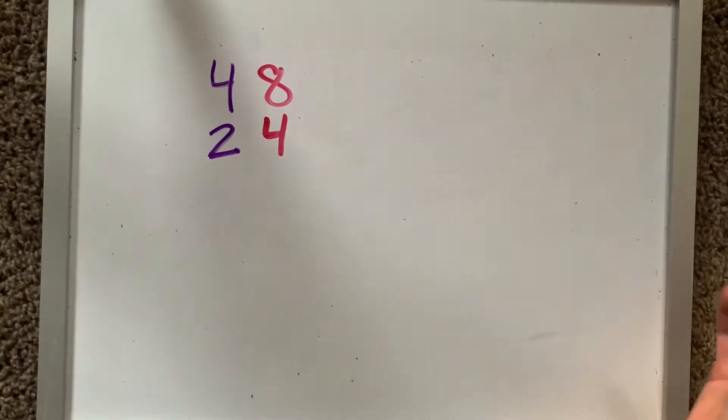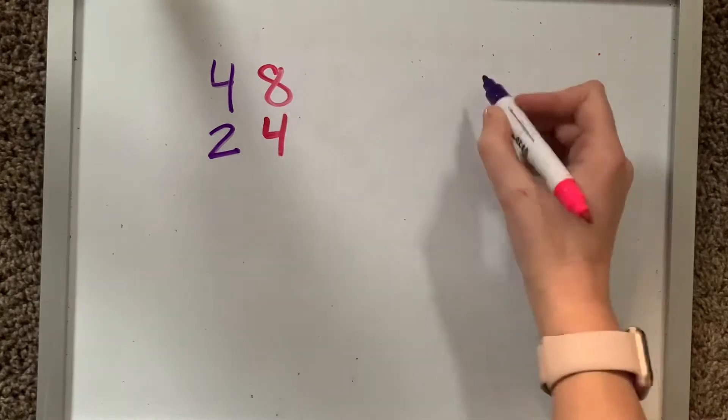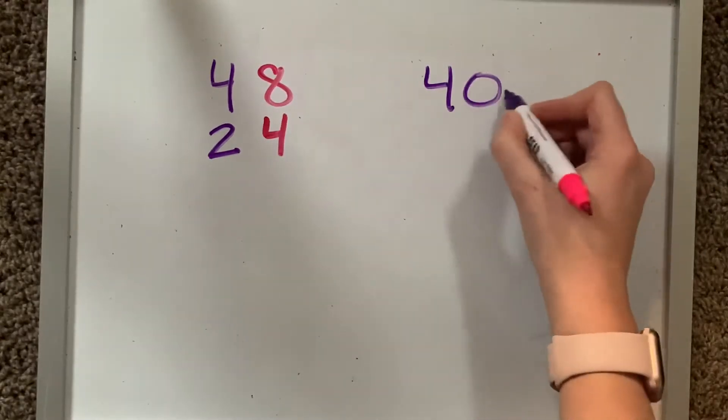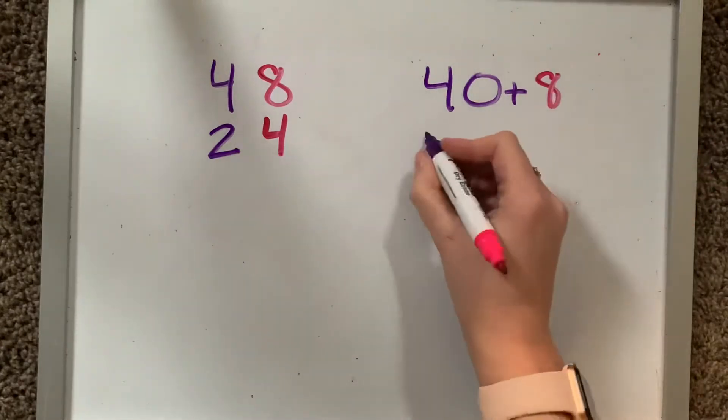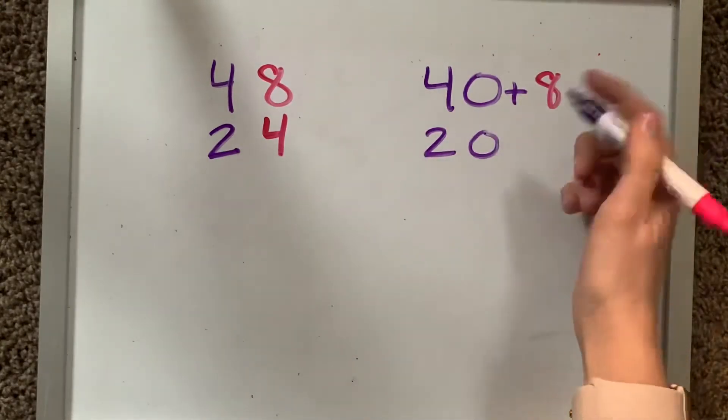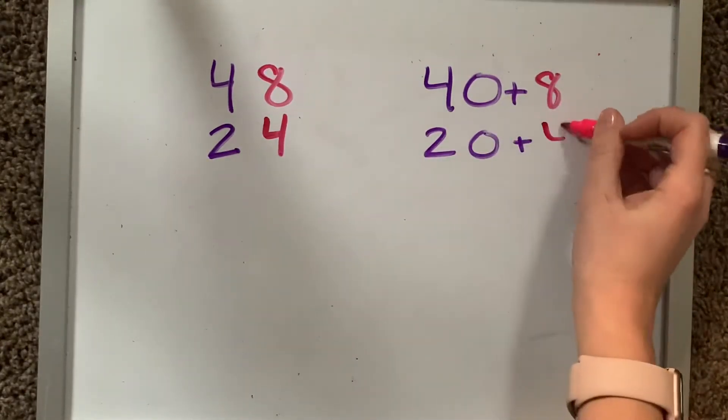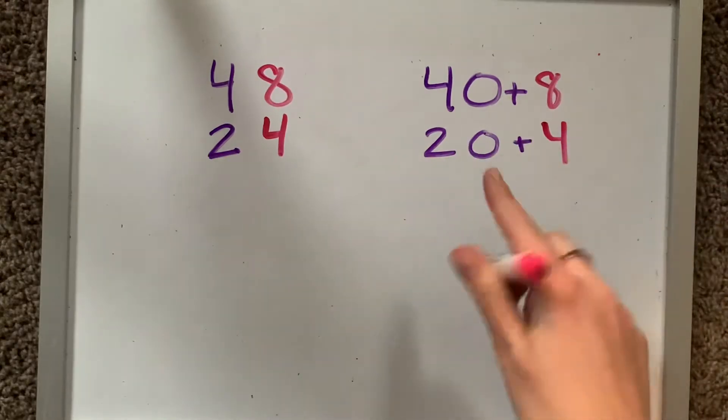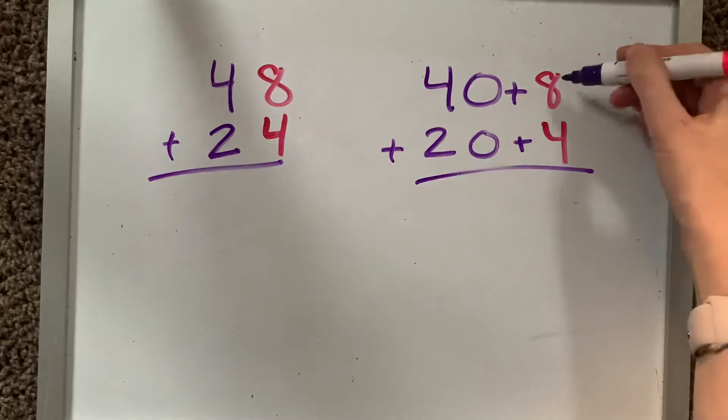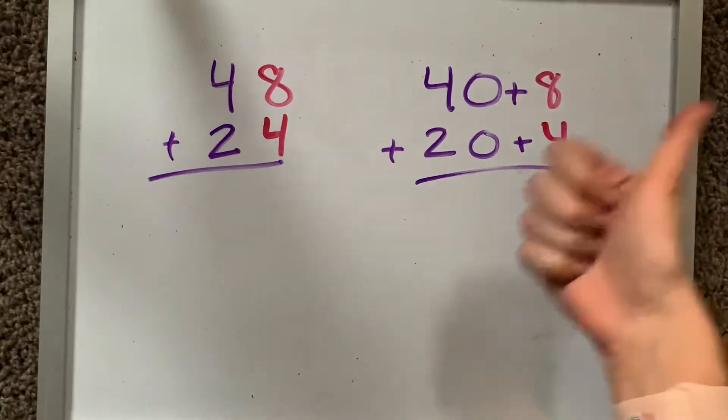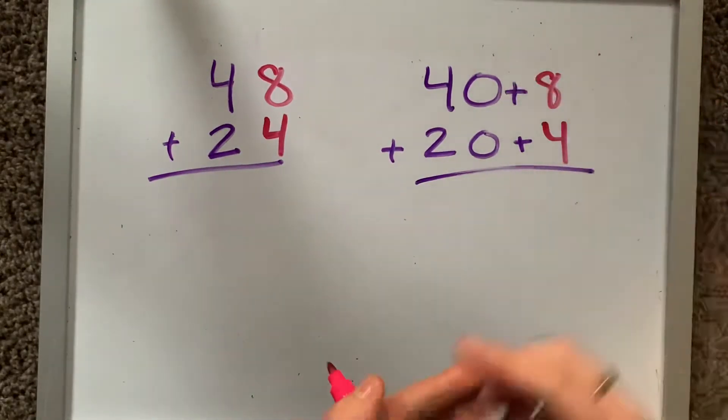48 plus 24. Well, if we spread out that first one, that is 40 plus 8 and 20 plus 4. Okay. Well, let's solve this. We know that we want to add it all together. 8 plus 4, 8, 9, 10, 11, 12.